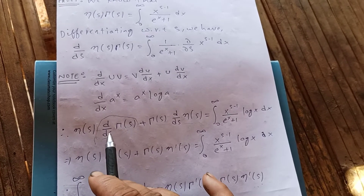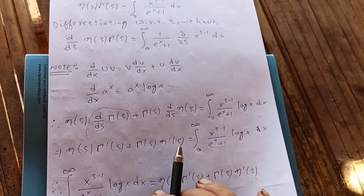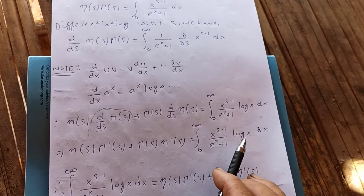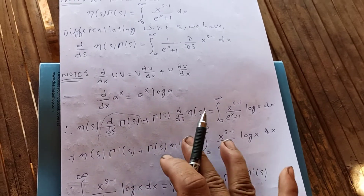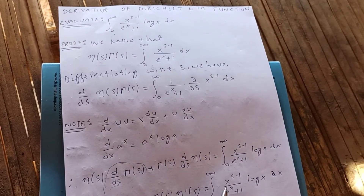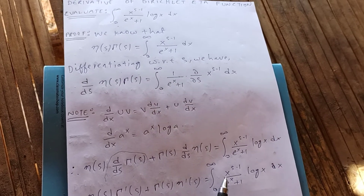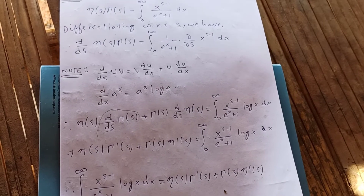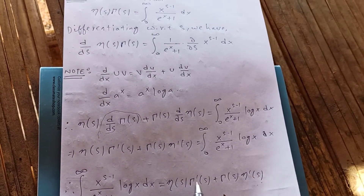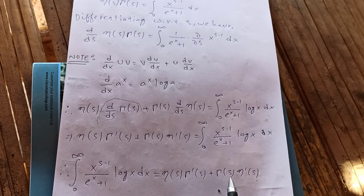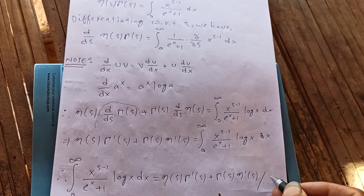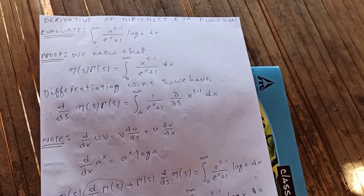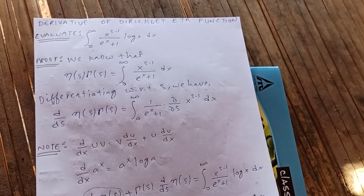The integral from zero to infinity of x to the s minus 1 upon e to the x plus 1 times log x dx equals η(s)·Γ'(s) plus Γ(s)·η'(s). This is the result we were looking to establish.